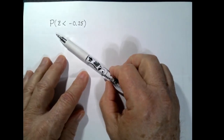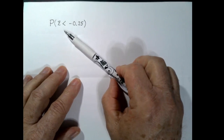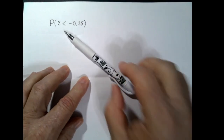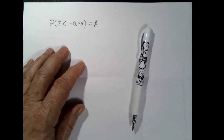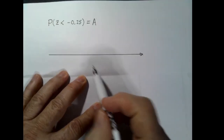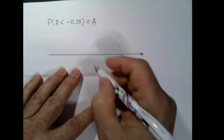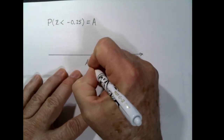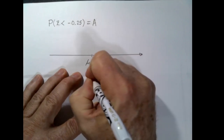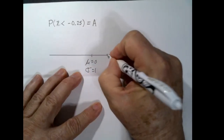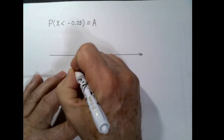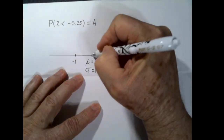Our first example: we'd like to look at the probability that z is less than negative 0.25. We're interested in finding the area in a standard normal curve where the z values are less than negative 0.25. First, let's draw a picture. We're looking at a standard normal curve because we're using the variable z. That means the mean of this distribution is 0 and the standard deviation is 1.